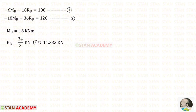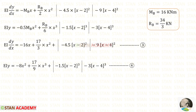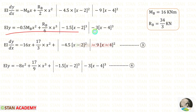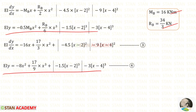Now let us take a calculator and solve these two equations. If you do not know how to solve two equations in the calculator, see the description below — there is a link you can click and watch the video. Using the calculator, for MB I have got 16 and for RB I have got 11.333 kN. In the slope equation, let us apply the values of MB and RB to get equation number 3. In the deflection equation also, let us apply the values of MB and RB to get equation number 4.